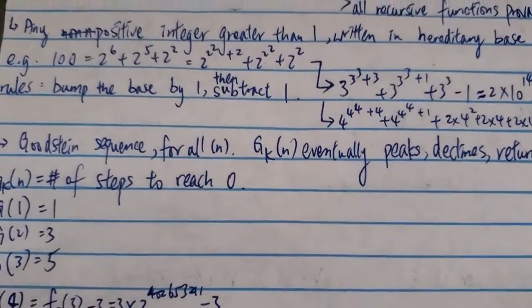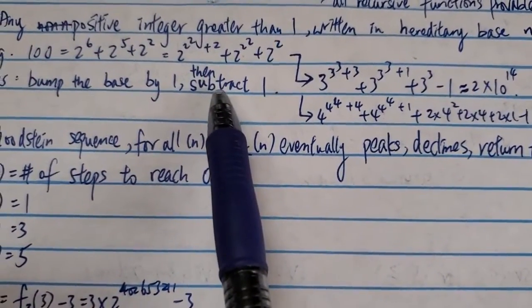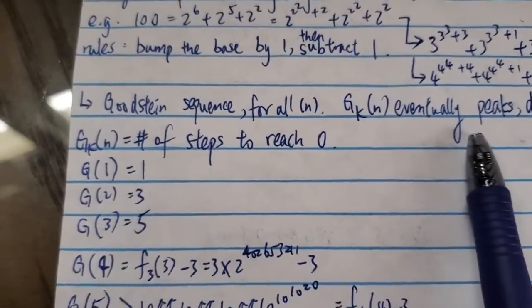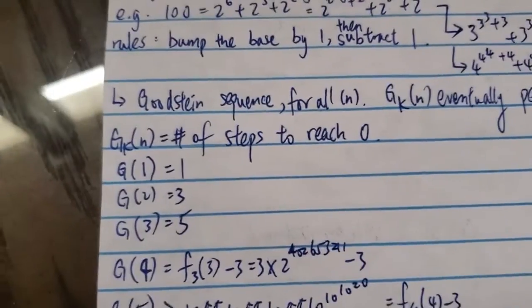Given infinite number of time. But this thing subtracts 1. It eventually makes this Goodstein sequence to peak, decline, and return to zero.